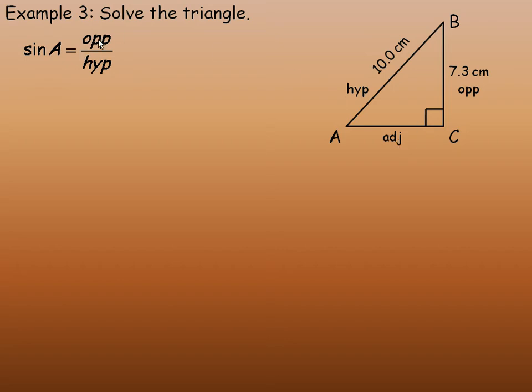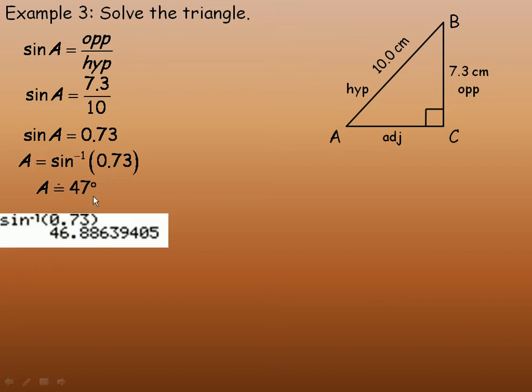So using the sine ratio we will fill in 7.3 and 10 in place of opposite and hypotenuse. 7.3 divided by 10 of course is 0.73. And then just like we did in the previous page with cosine I need to find angle A. So the function you use in your calculator is you take the inverse sine of the 0.73, and that will return what the angle is. And it works out to approximately 47 degrees. So in our diagram we will label this with a 47 degree angle.